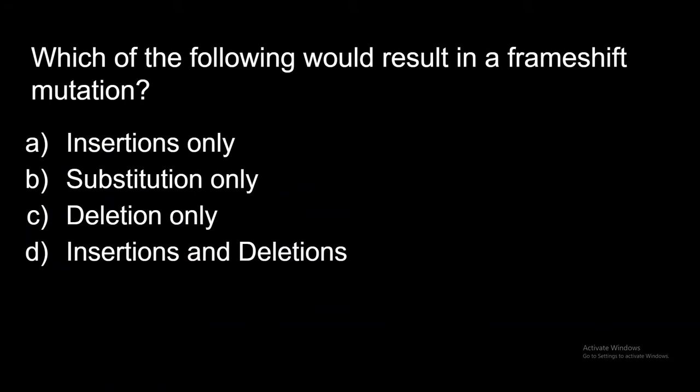So which of the following would result in a frameshift mutation? Is it A, insertions only, B, substitutions only, C, deletion only, or D, insertions and deletions? Pause the video now. Okay. So we're back. So a frameshift mutation is caused by insertions and deletions. Because if you add something, it's definitely going to change how you read the sequence from there on. And if you remove something as well, it would change how the sequence is read.